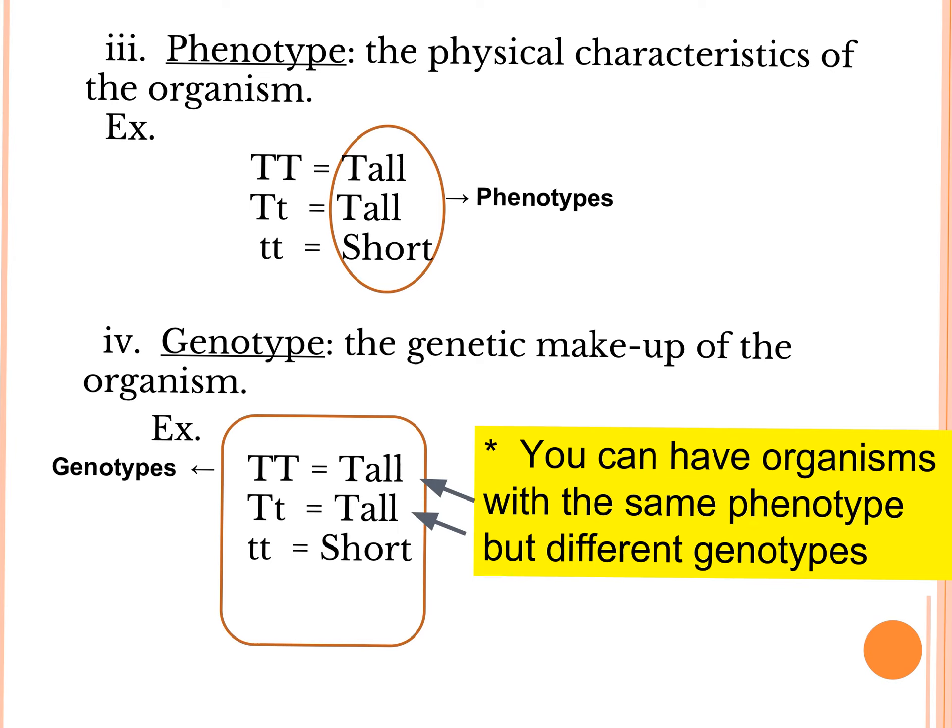And so before we really break down the Punnett squares, we want to make you aware of a few key terminology points. So we have phenotype and genotype, and we'll be referring to those when we do Punnett squares. So the first is phenotype, and the root of phenotype is pheno, which just means to show. So the Latin root of that, pheno, means to show. And it's the physical characteristics of an organism. So if it's tall, if it's short, if it has brown hair, if it has blue eyes.